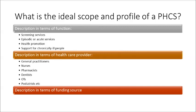Let's look at what the ideal scope and profile of a primary health care service is. Essentially, primary health care services are ideally designed to be the first point of contact for management of health problems. For example, if you're sick — if you have a cold or something more serious — you might access your GP, your general practitioner, your family doctor, who provides a primary health care service. These services can be described in terms of the functions they serve: screening services, episodic or acute services, health promotion, or support for chronically ill people. This is what the primary health care system aspires to, but not necessarily the way it actually works in Australia.